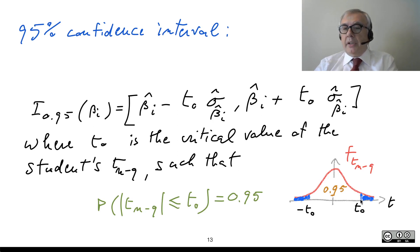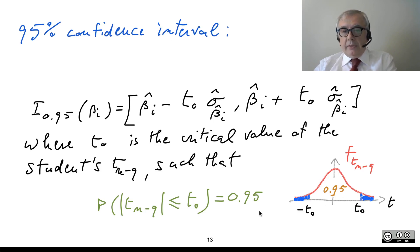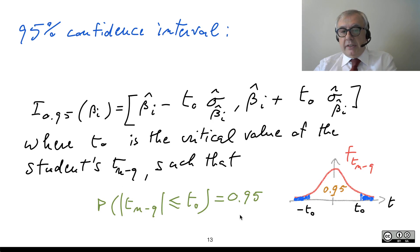T0 can be found from statistical tables or from Student's t calculators available on the web or on your calculators. The value of t0 is such that the probability that the absolute value of the Student's t with N minus Q degrees of freedom exceeds t0 is 0.05.